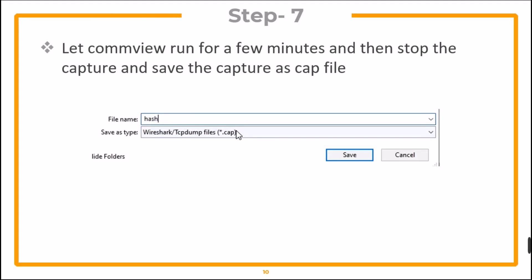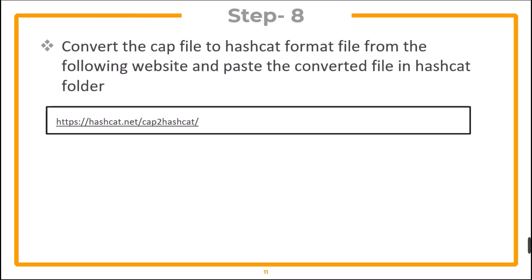Let CommView run for a few minutes, then stop the capture and save the capture as a CAP file. Now we need to convert this CAP file to hashcat file format. Visit the official website, convert your file to hashcat format, and once converted, paste the converted file into the hashcat folder.